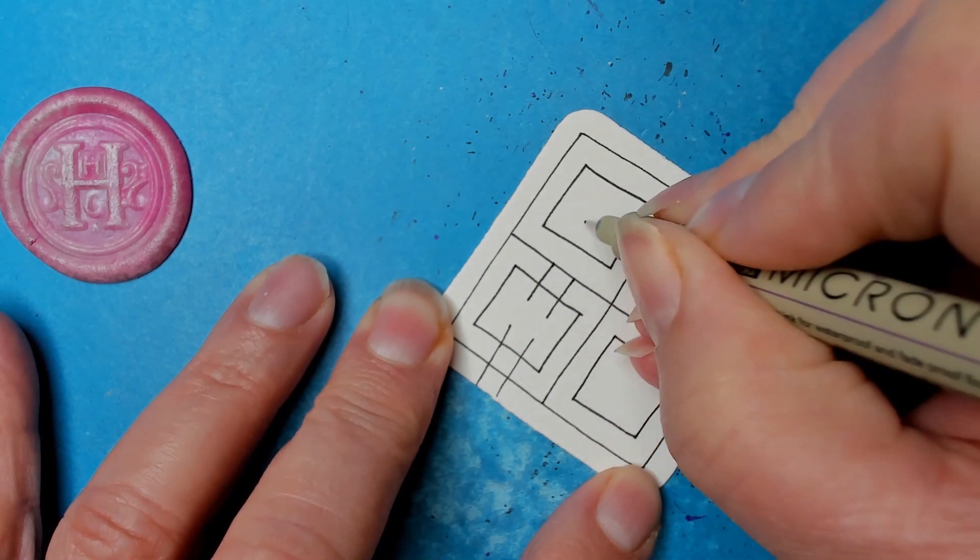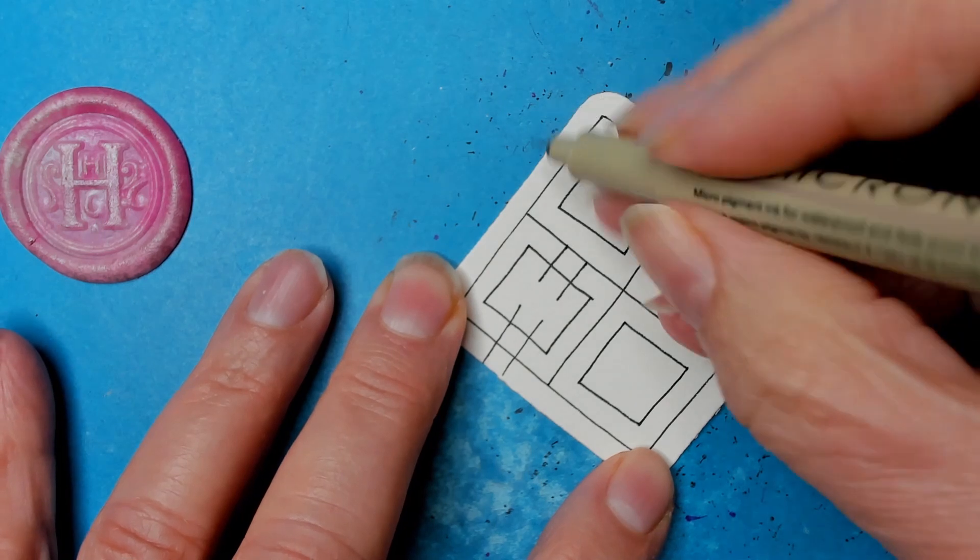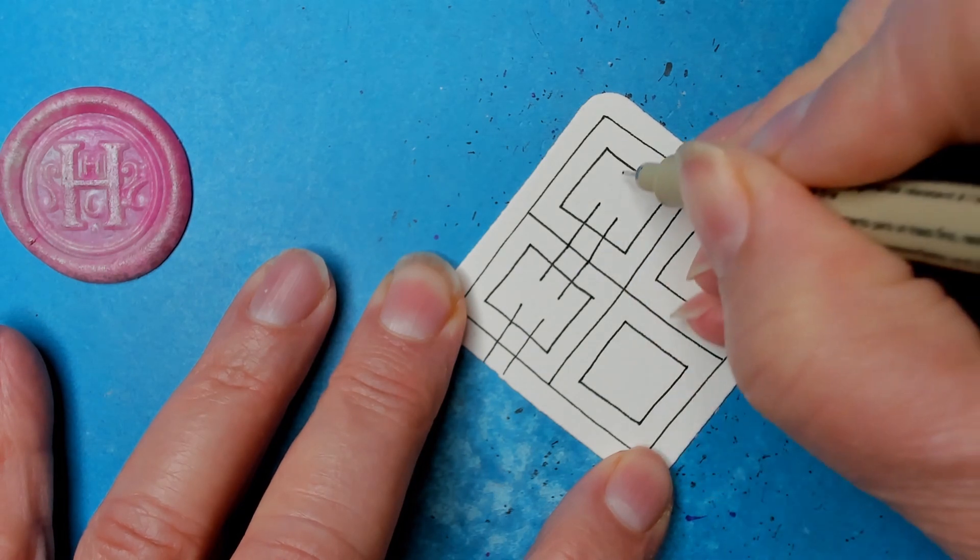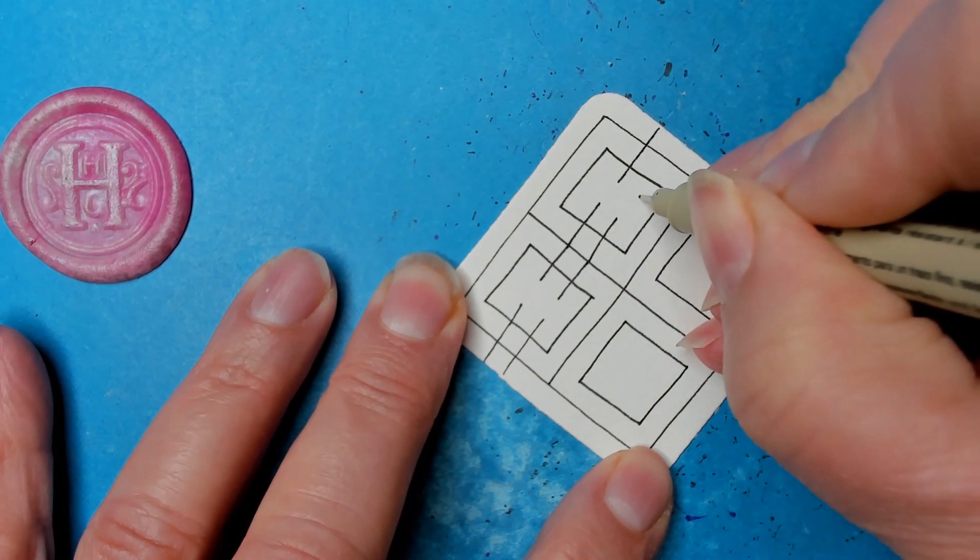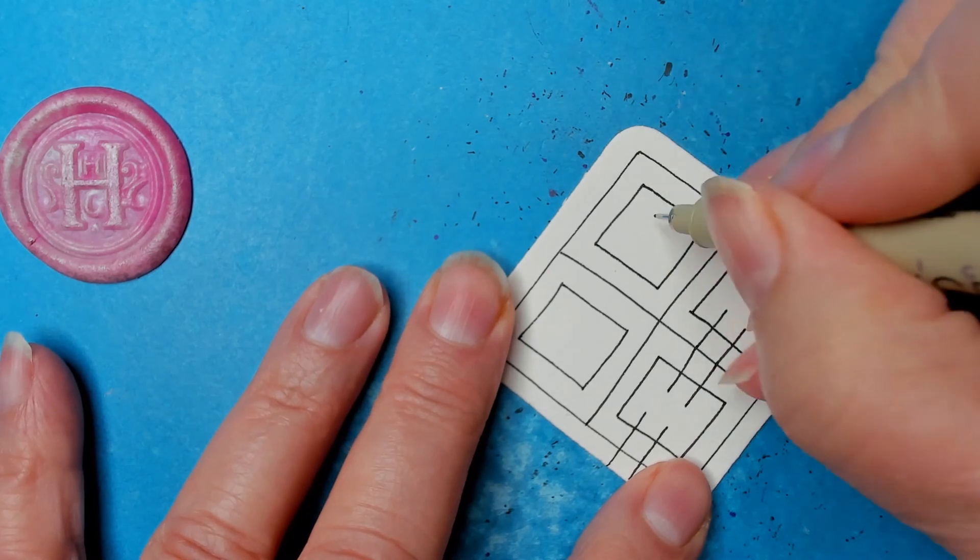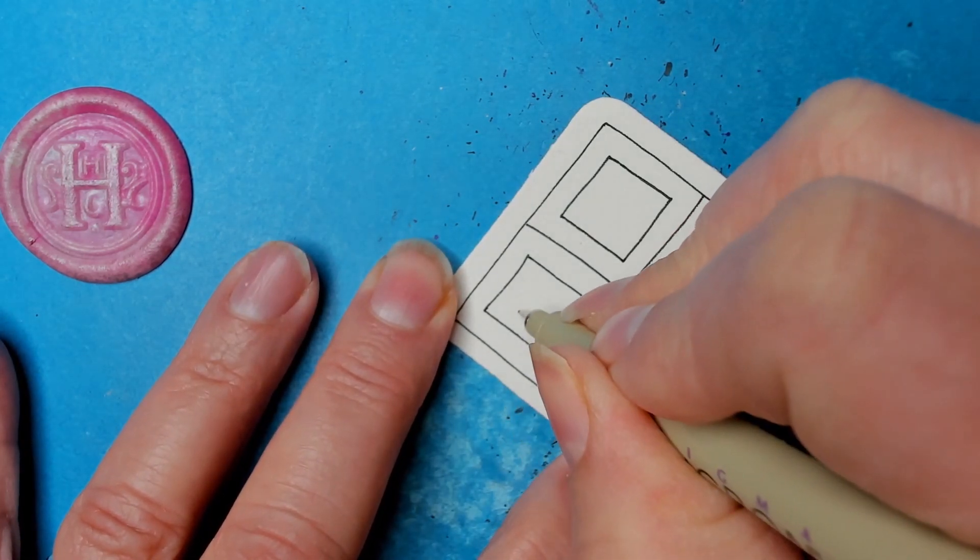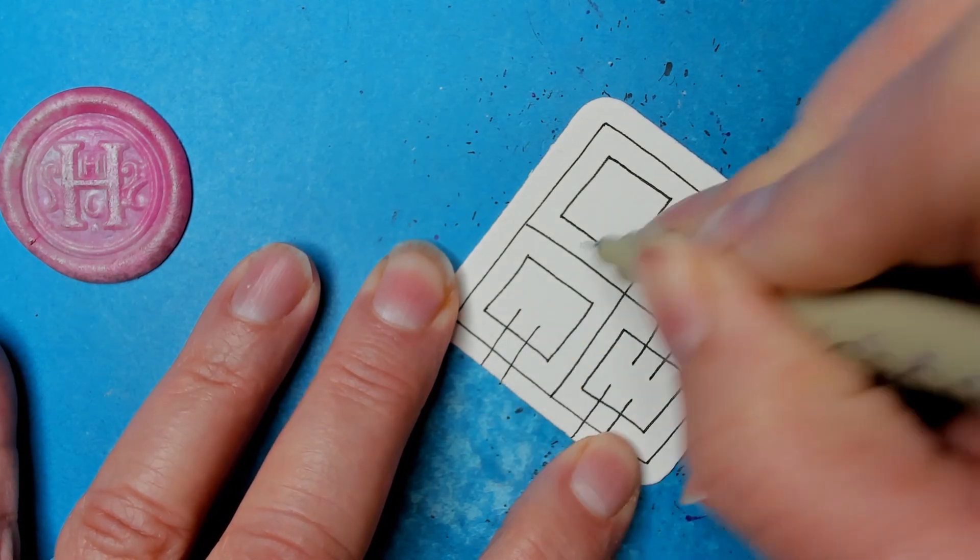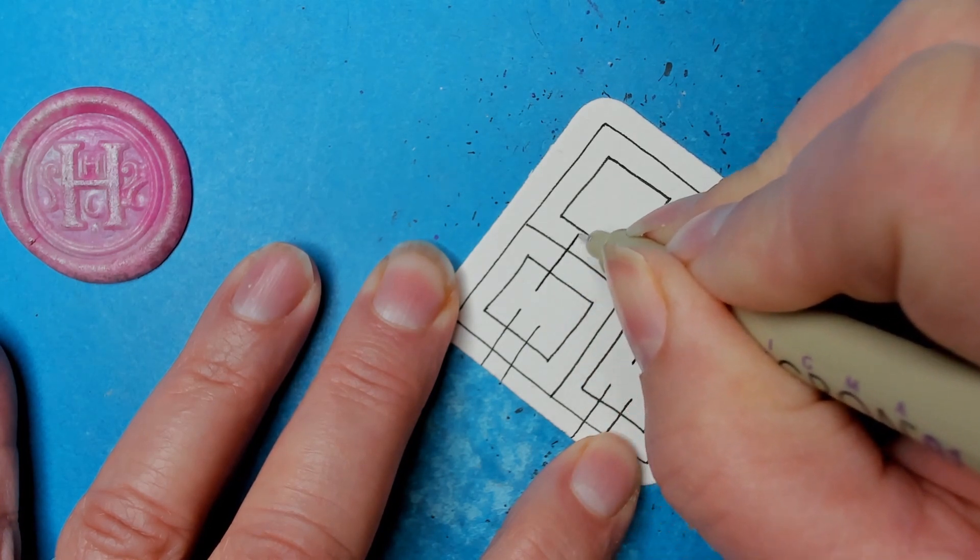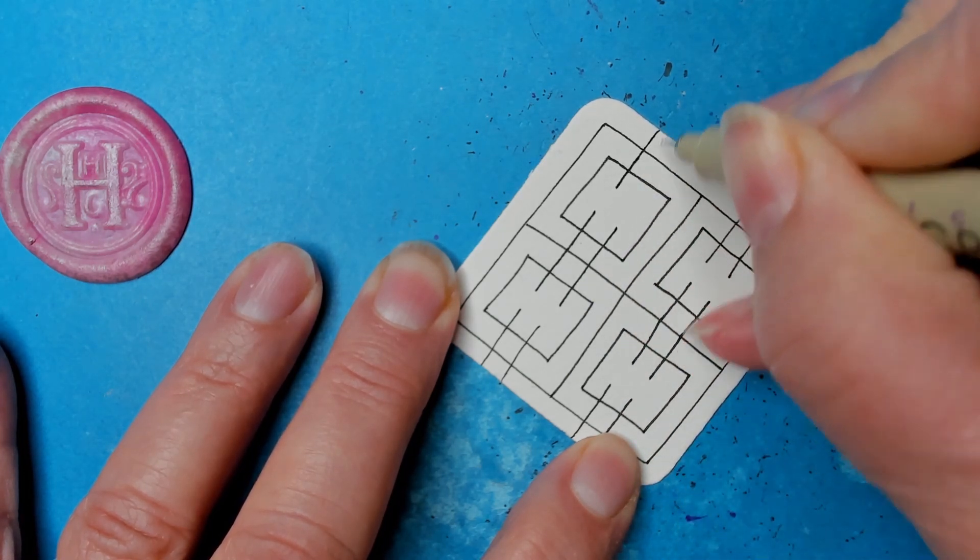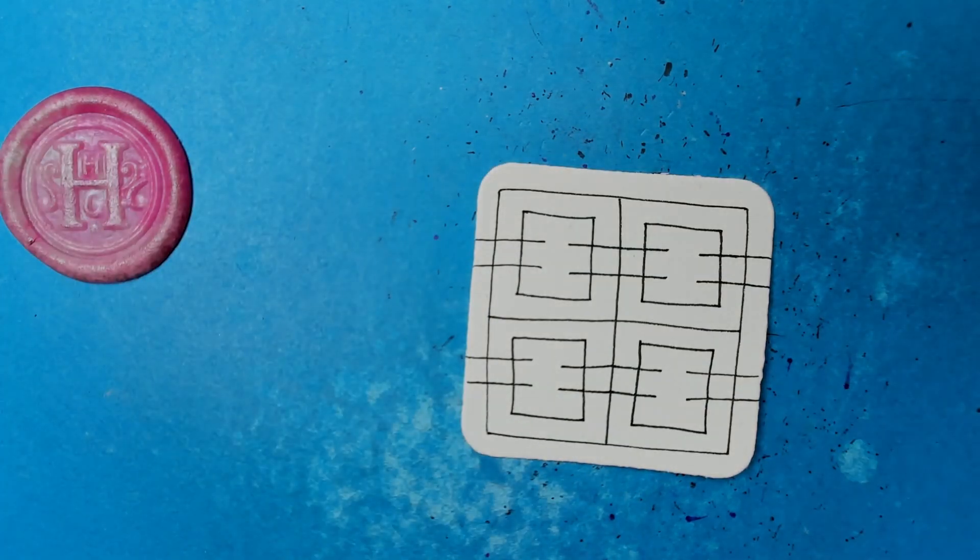Of course you can continue it on but I kind of like the idea, especially on the next step. If you need the tile to be forgiving, that's what will make the difference. And you can just continue it on if you want. It's okay. But we definitely want to have that gap in the center.